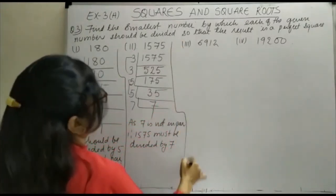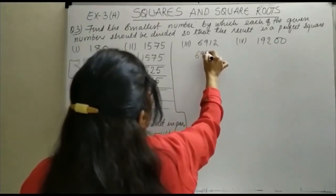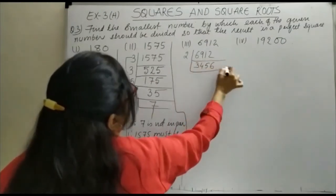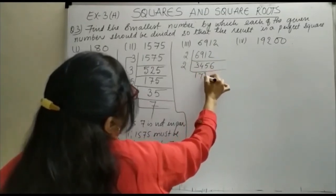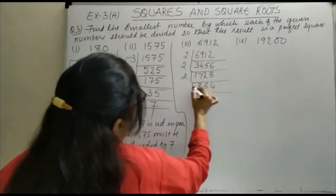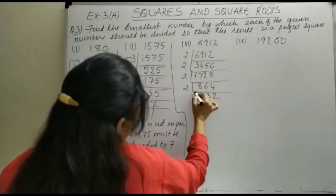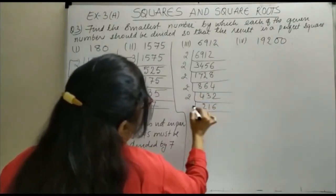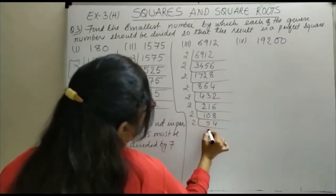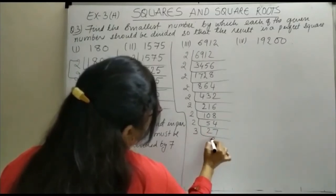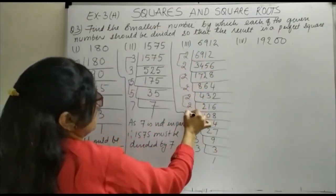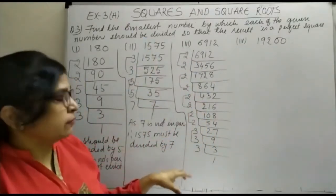Next we have 6912. We carry out the prime factorization by repeatedly dividing by 2: 6912 ÷ 2 gives 3456, then 1728, 864, 432, 216, 108, 54, 27. Then 27 is divided by 3 three times: 27 ÷ 3 = 9, 9 ÷ 3 = 3, 3 ÷ 3 = 1. When we check the pairing, we find that one factor of 3 is unpaired. So this number should be divided by 3.